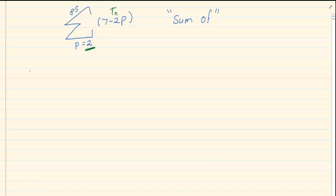So if I wanted term 1, it would be 7 minus 2 into 2. I am getting the 2 from the bottom of the sigma notation, which is equal to 3.